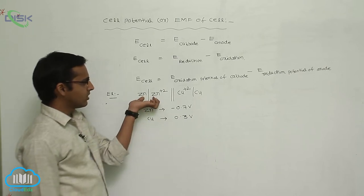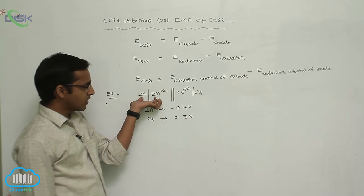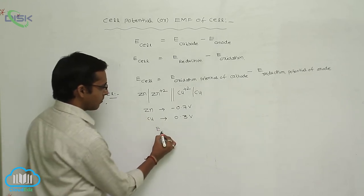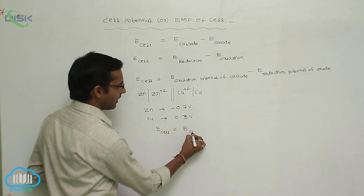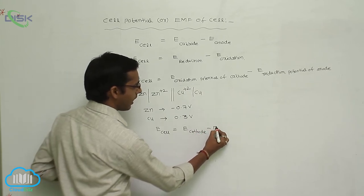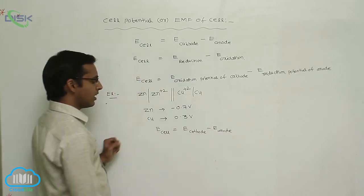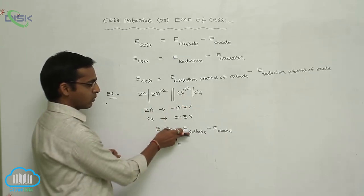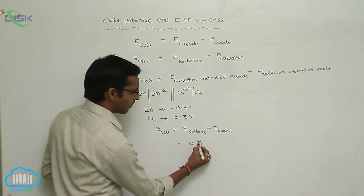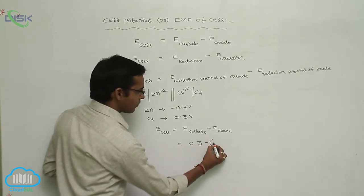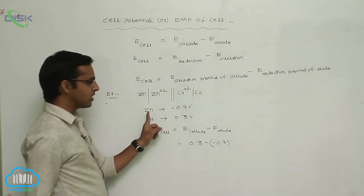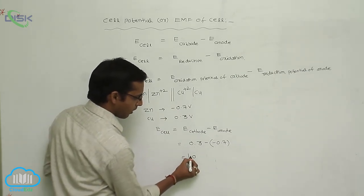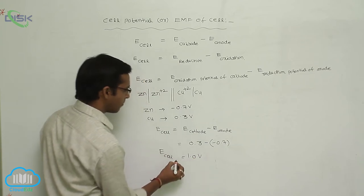In this process, the left-hand side electrode — zinc — acts as the anode, and the right-hand side is the cathode. To calculate EMF of cell: E cell equals E cathode minus E anode. E cathode value is 0.34 volt minus (−0.76), so the total value is approximately 1.10 volt. This is the calculation for EMF of cell.